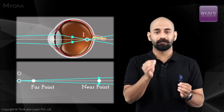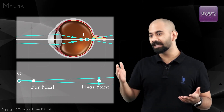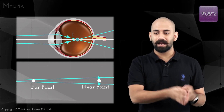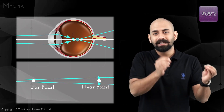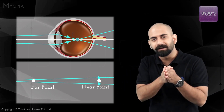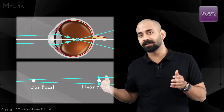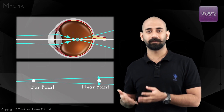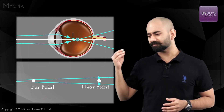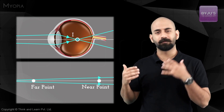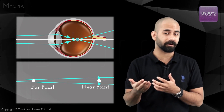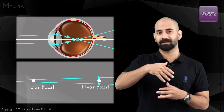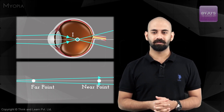The focal length of the lens cannot increase any further, so even if the object moves farther away the focal length stays the same. Therefore the image ends up being formed in front of the retina — and the further the object moves, the more in front of the retina the image forms. That's why a myopic eye sees objects beyond its far point as blurry.